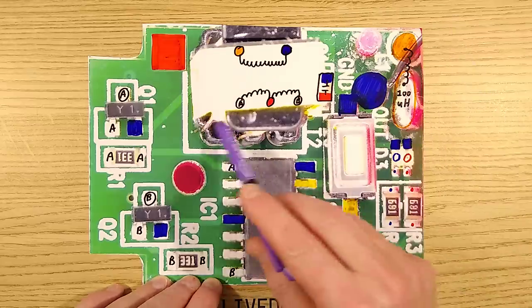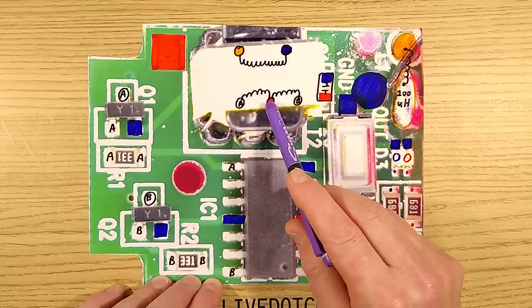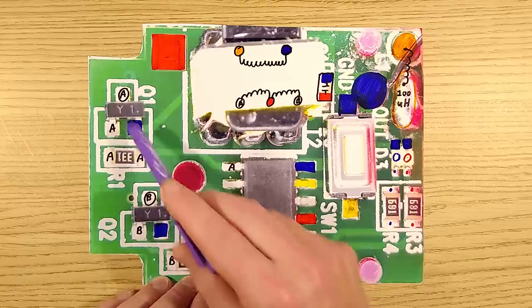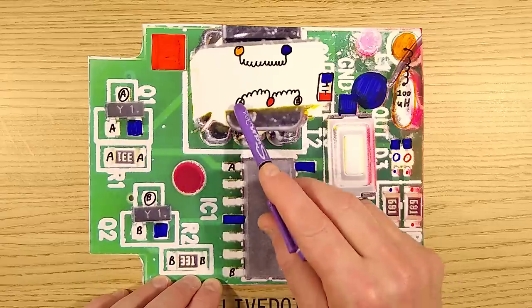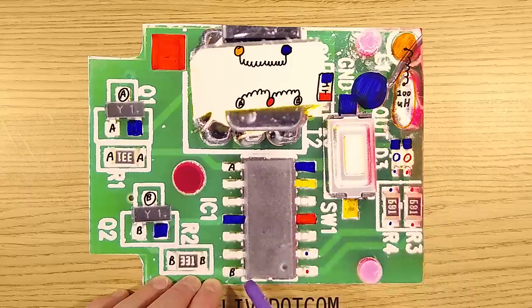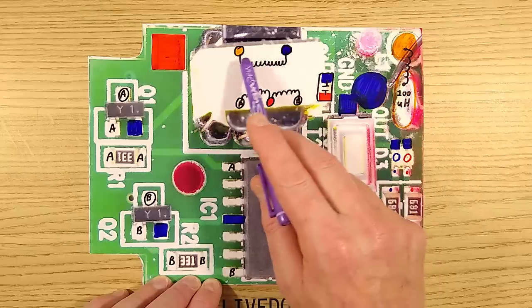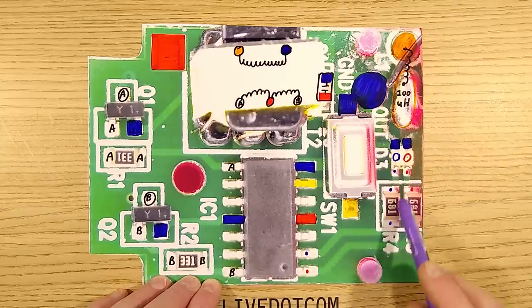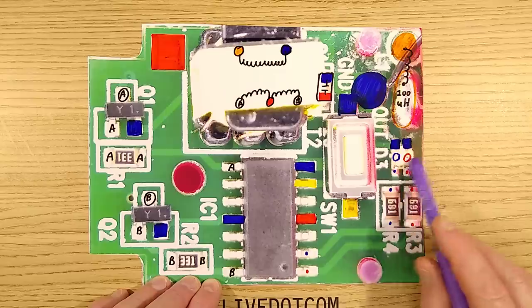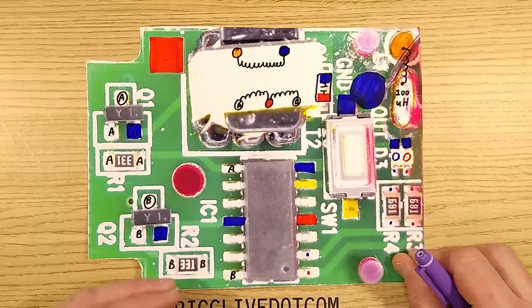What's interesting about this design is that it's using a push-pull transformer. One end connects to positive, and these two standard NPN transistors alternately pull the A and B lines down to the negative rail, creating a strong AC signal which goes to the ultrasonic transducer. The LEDs each have a 680 ohm resistor in series, one red and one blue.